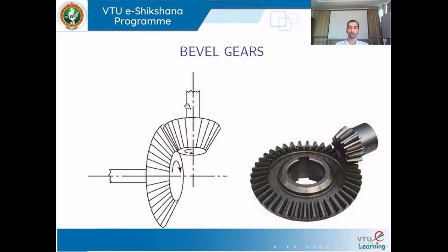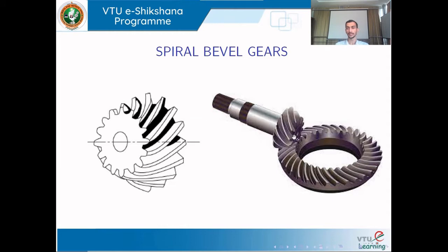For transmitting power between two shafts which are inclined — for example at 90 degrees — bevel gears are used. In bevel gears, which have a conical structure, the teeth are inclined with respect to the axis of the shaft. For a spiral bevel gear, the teeth are slightly curved rather than straight.